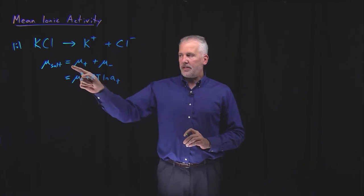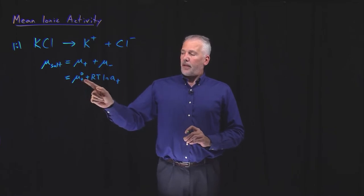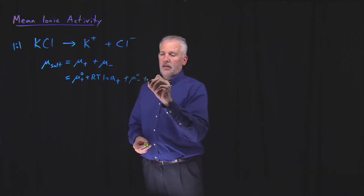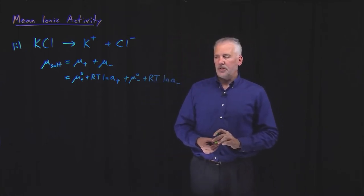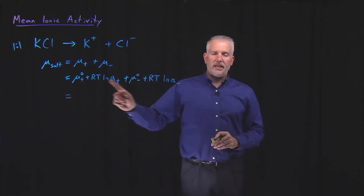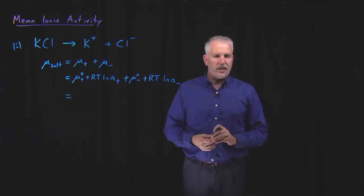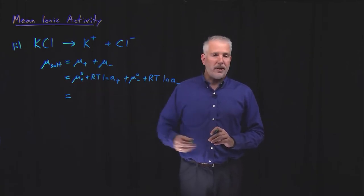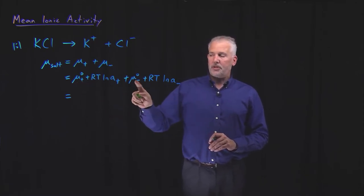What I've written down is the chemical potential of the cation — perhaps K⁺, perhaps sodium, perhaps something else — written as the standard chemical potential plus RT ln of the cation activity. We can do the same for the anion: standard chemical potential of the anion plus RT ln of the anion activity. We won't dwell too much on the standard state terms, because we can define the standard state to be whatever is most convenient, and that quantity usually won't matter too much.